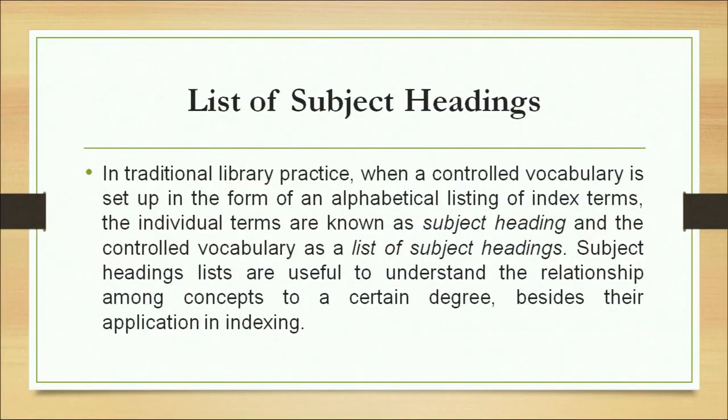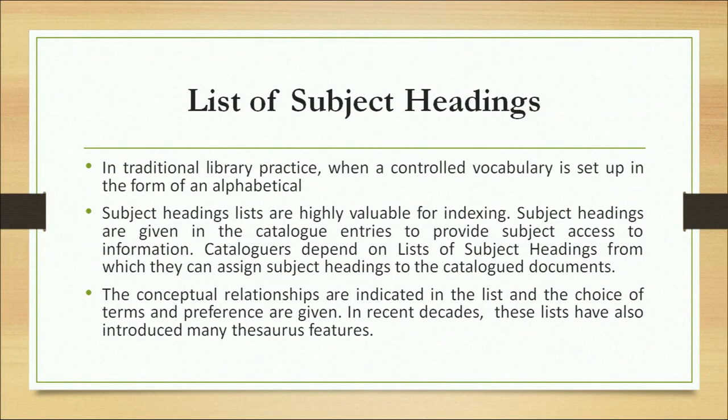Subject headings: in a traditional library, when a controlled vocabulary is set up in the form of an alphabetical listing of index terms, the individual terms are known as subject headings, and the controlled vocabulary as a whole is a list of subject headings. Subject headings lists are useful for understanding relationships among concepts. Subject headings are highly valuable in catalog entries to provide subject access to information. Catalogers depend on lists of subject headings from which they assign subject headings to documents being cataloged.